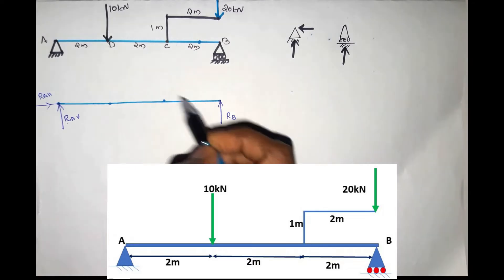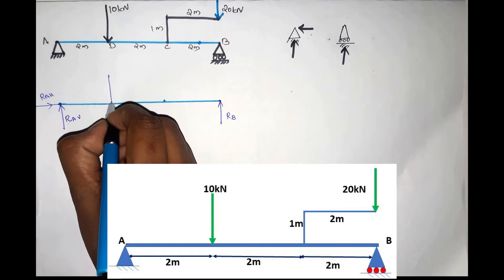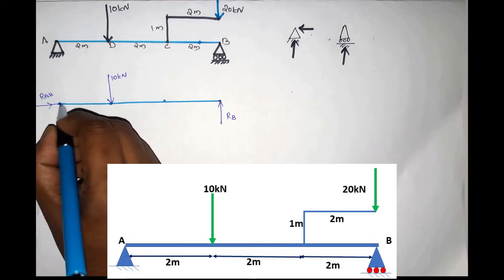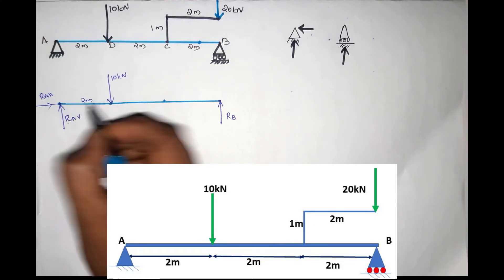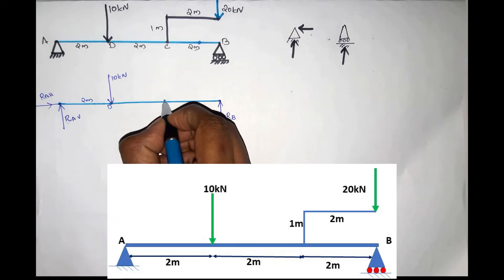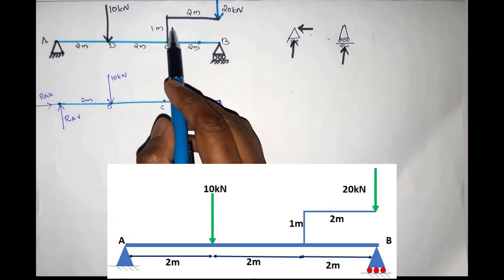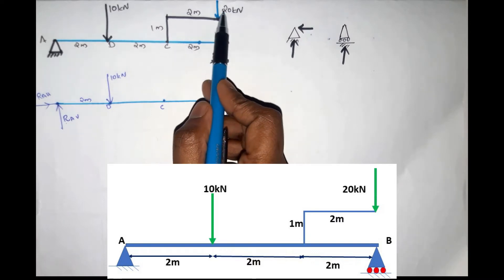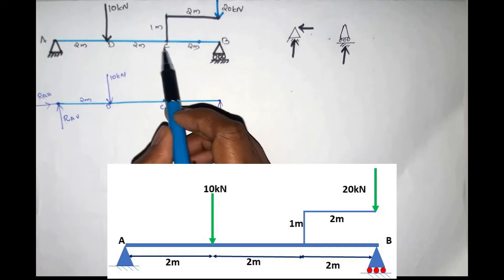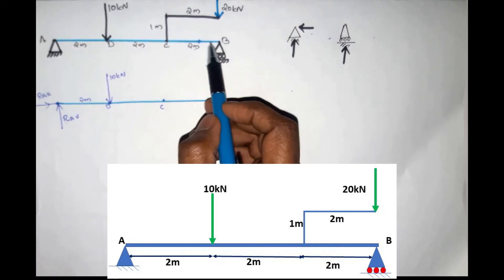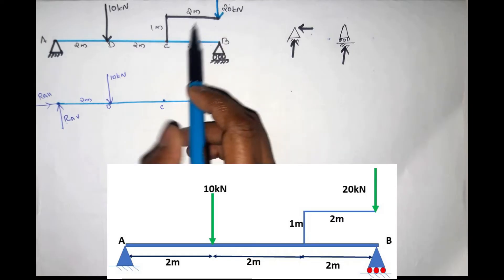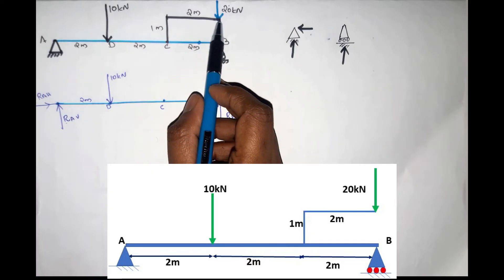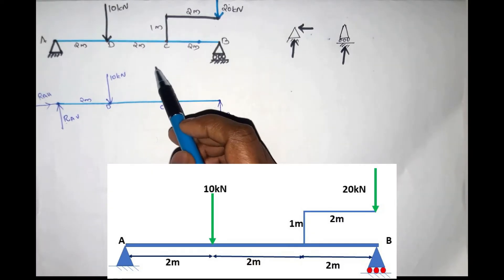The first force is 10kN downward. At point C, the force distance is 2m. This is the second point C — force is 20kN, a vertical force. The beam distance and horizontal distance is 2m.